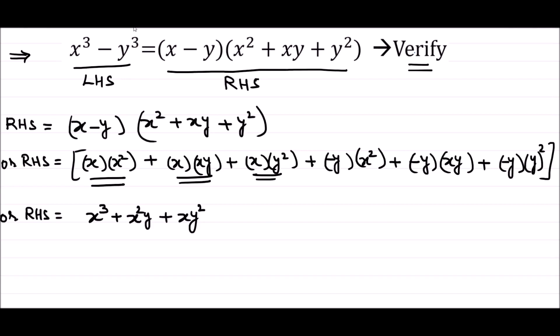We always write x first, then y, so it is easy to follow without getting confused. Now multiplying minus y through the bracket: minus y into x square gives minus x square y; minus y into x y gives minus x y square; and minus y into y square gives minus y cube.